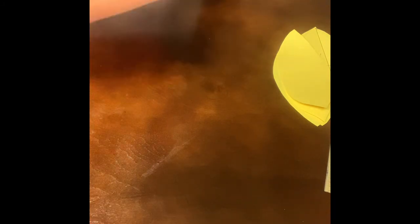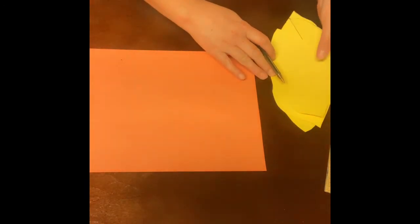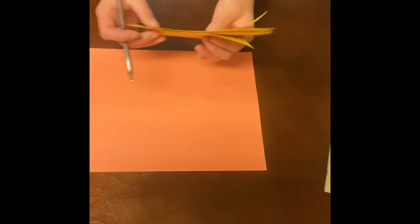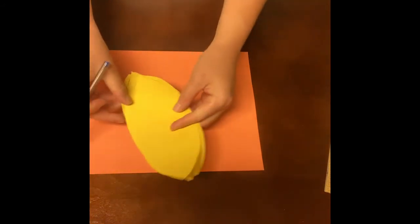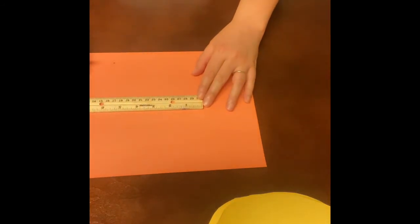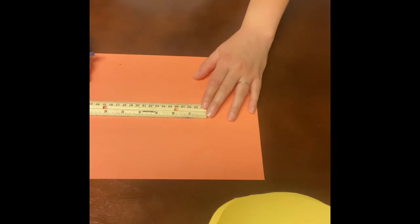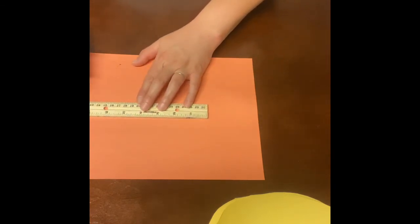Alright, let's grab our orange sheet of paper, or the other one, depending on what color you chose. Now we're going to make the center. These are going to be out, and let's put them on the side. Now the center is going to be a five inch circle.